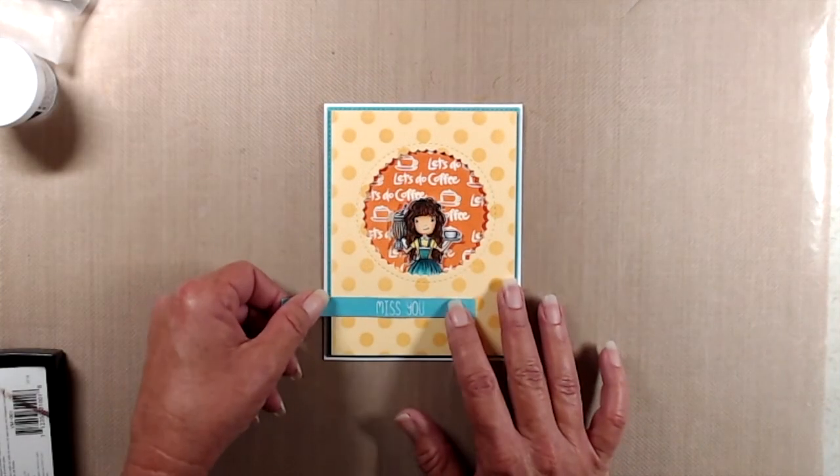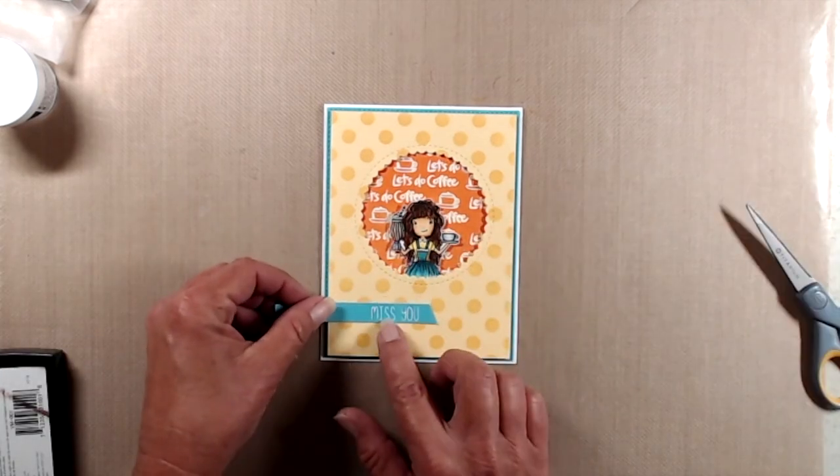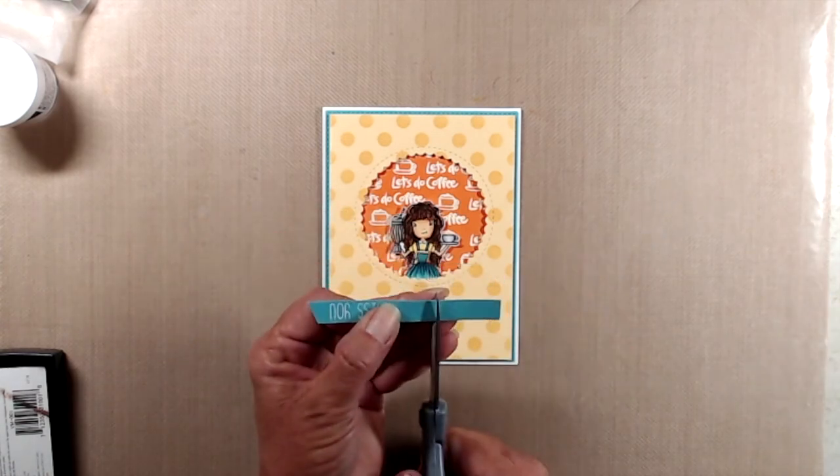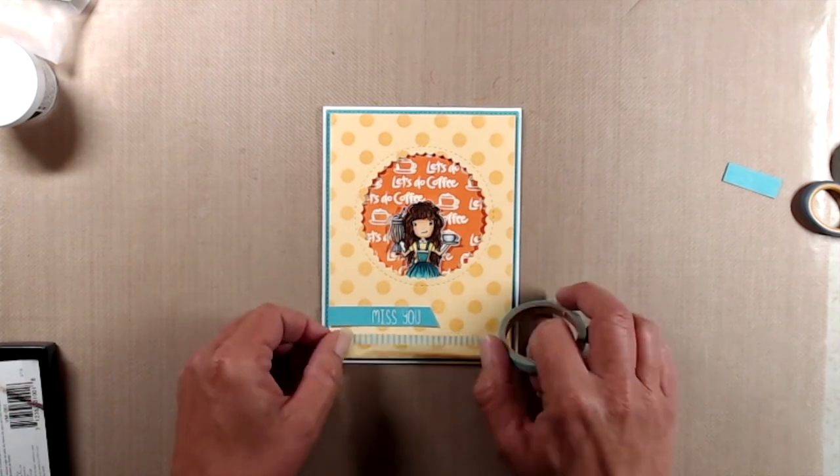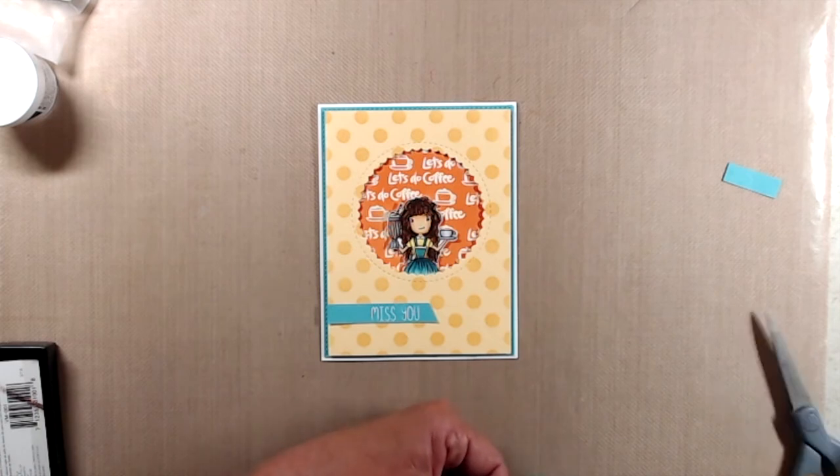I trimmed down the sentiment strip with my scissors, cutting that right hand side at an angle with my scissors. Then I pulled out washi tape that I've had in my stash forever and added that underneath the sentiment strip. I did use my tape runner to adhere the sentiment strip flat down. And that's it—that finishes up my card for today.